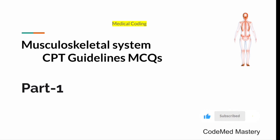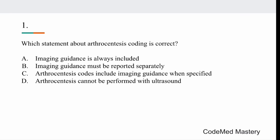This is the first question: which statement about arthrocentesis coding is correct? Option A: imaging guidance is always included. Option B: imaging guidance must be reported separately. Option C: arthrocentesis codes include imaging guidance when specified. Option D: arthrocentesis cannot be performed with ultrasound.